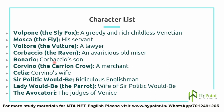Mosca is Volpone's servant, referred to as the fly. Voltore is the vulture — he is a lawyer. Corbaccio is symbolized as the raven; he is an avaricious old miser. Bonario is Corbaccio's son. Voltore, Corbaccio, and Corvino are all legacy hunters — since Volpone is childless and rich, they want to please him with gifts and favors in order to be named his sole heir when he dies.